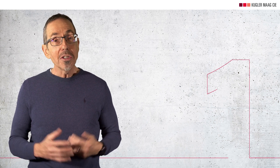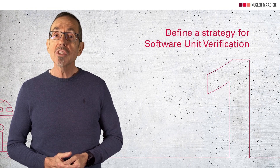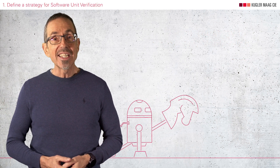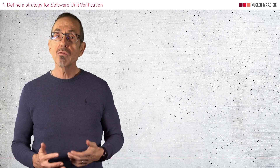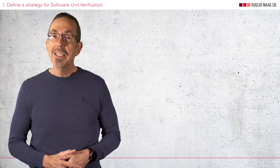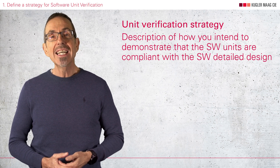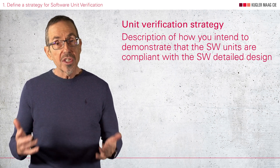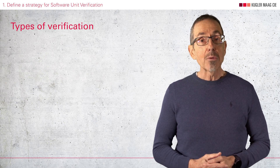Let's take a look at the three most important points of the Software Unit Verification process. Point number 1 is to define a strategy for software unit verification. A strategy is an easy-to-understand instructional description. This is especially important for larger distributed projects so that all people know how to do it. The main purpose of the strategy is to describe how you intend to demonstrate that the software units comply with the detailed design. Three types of verification are required, and you should explain how they should work.